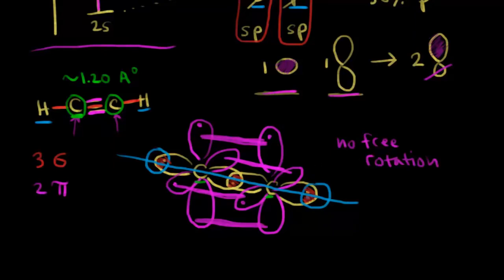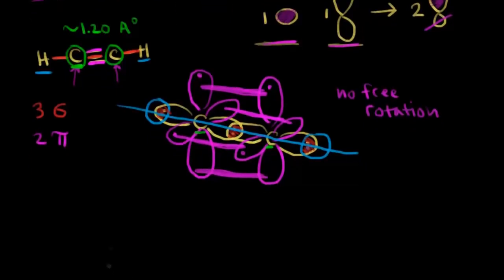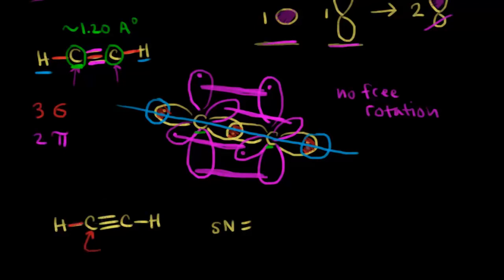Let's draw the dot structure one more time and analyze it using steric numbers. The steric number equals the number of sigma bonds plus the number of lone pairs. For this carbon in acetylene: in the triple bond I have one sigma bond and two pi bonds, so there are two sigma bonds total and zero lone pairs. Two plus zero gives a steric number of two. I need two hybrid orbitals, made from one s orbital and one p orbital — so a steric number of two means sp hybridization. Linear geometry with bond angles of 180 degrees.